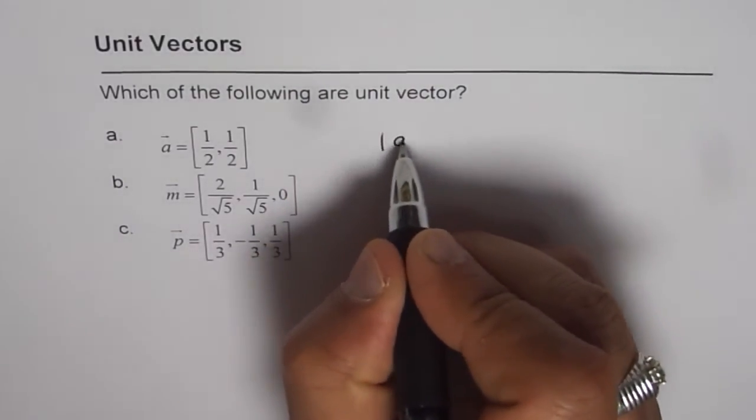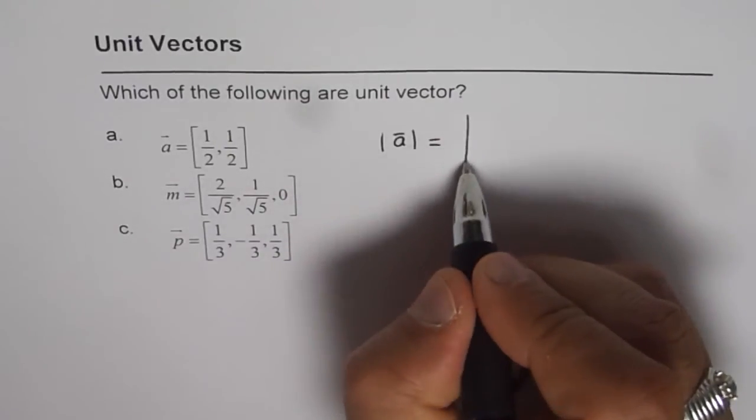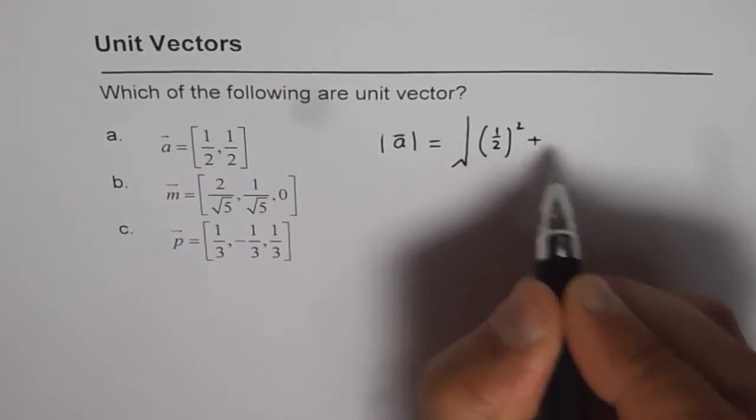So let us calculate what is the magnitude of vector A. It is square root of half square plus half square, right?